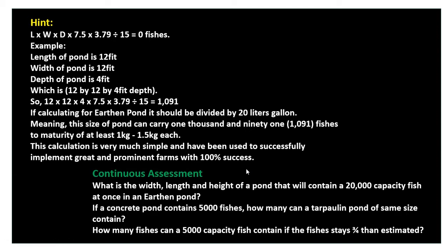This calculation has been used to successfully implement good and prominent farms with 100 percent success, so I'm giving you a guarantee — if you follow as explained, you will get good results. Now for continuous assessment: what is the width, length, and height of a pond that will contain 20,000 capacity fish at once in an earthen pond?